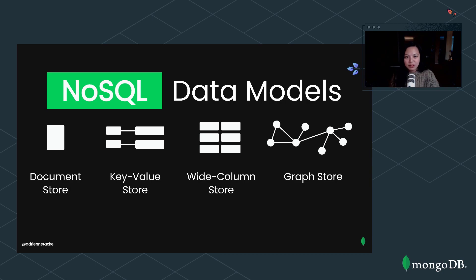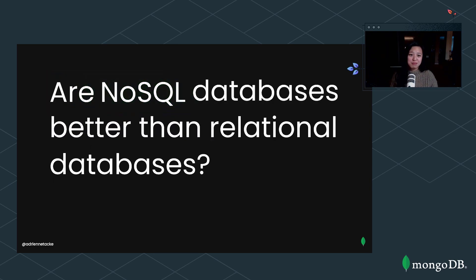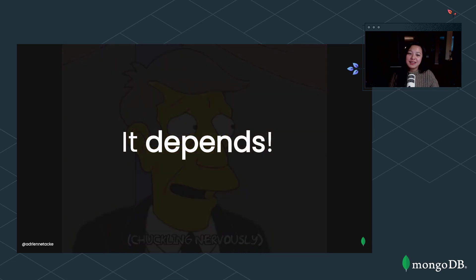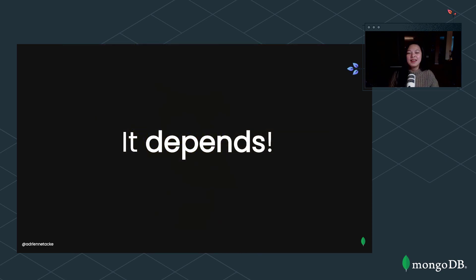As we think about these four data models — four different ways of storing data than a relational model — the next logical question is: is this better than a relational database? And technically I'm paid to say yes, but of course the real answer is that it depends. In order to truly understand why some differences matter, we need to do a refresher on a few important fundamentals.